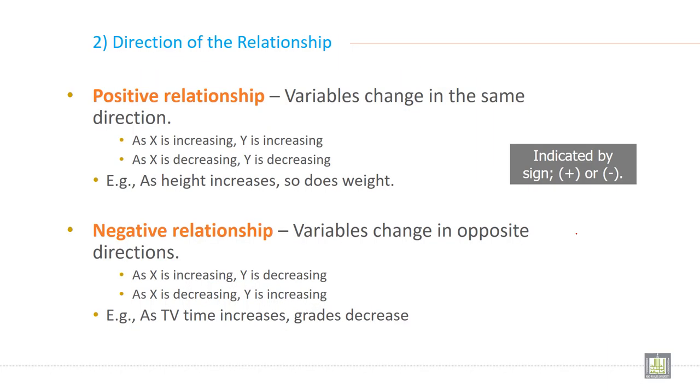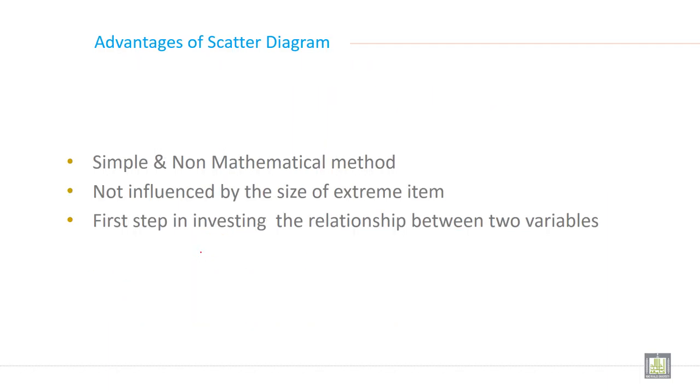Direction of the relationship between two or more than two variables. First one is positive relationship, variable changes in the same direction. And the second one is negative relationship when variable changes in opposite direction. You must remember these examples.